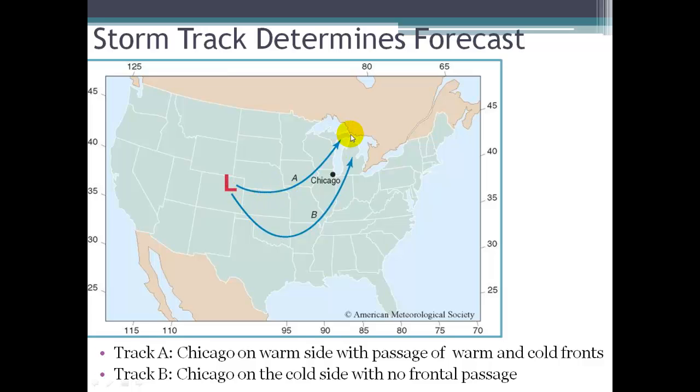So if track A is the track that the storm follows, Chicago is going to be on the warm side as the warm and cold fronts pass. But if the storm follows track B, Chicago is going to be on the cold side. So it could be two very different forecasts depending on which track that storm follows.